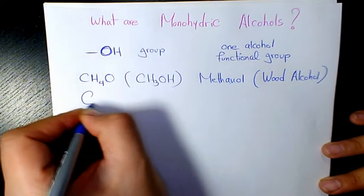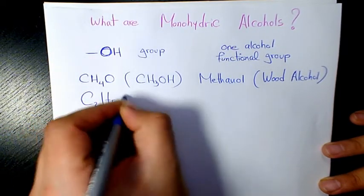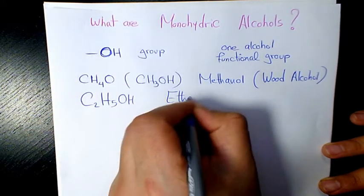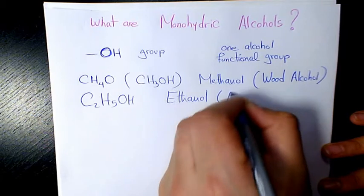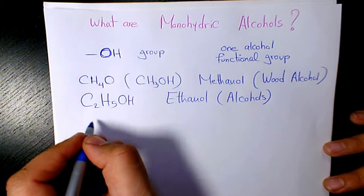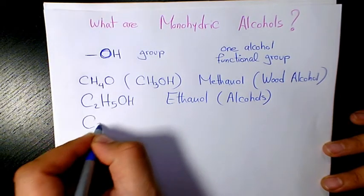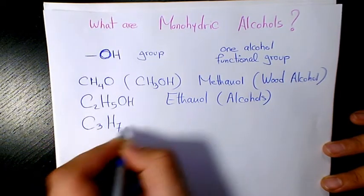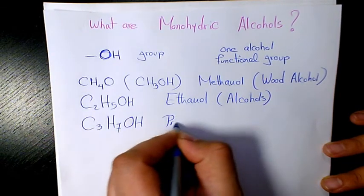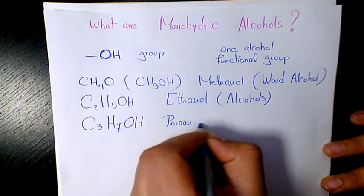Another example is C2H5OH, which we call ethanol, or simply alcohol. Another one is C3H7OH.